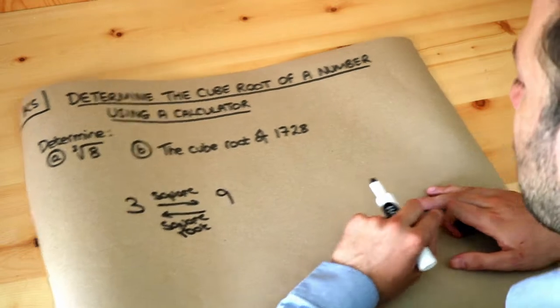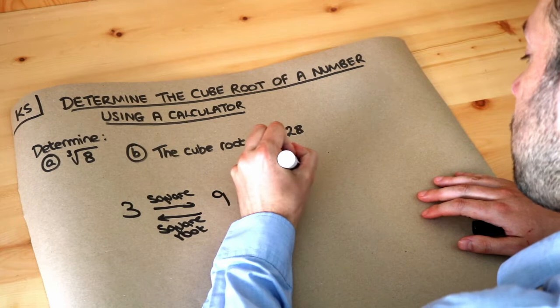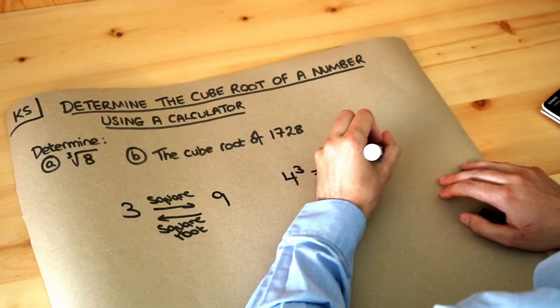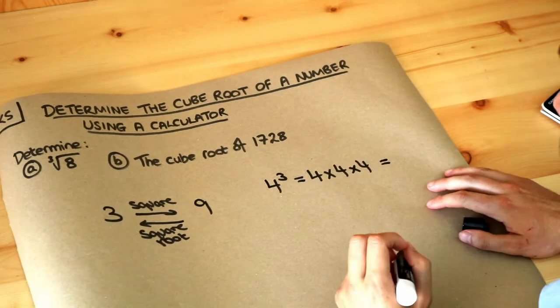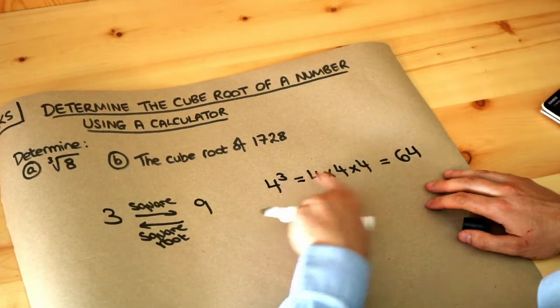Now we also have something called cubing. We saw in a previous video that if we had, for example, 4 cubed, that means a number multiplied by itself multiplied by itself. 4 times 4 times 4 is 64, so 4 cubed is 64.